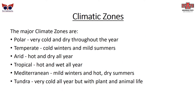The major climate zones are: polar — very cold and dry throughout the year; temperate — cold winters but mild summers; arid — hot and dry all year; tropical — hot and wet all year; Mediterranean — mild winters and hot, dry summers; and tundra — very cold all year, but with plant and animal life, as opposed to polar regions which have very little.